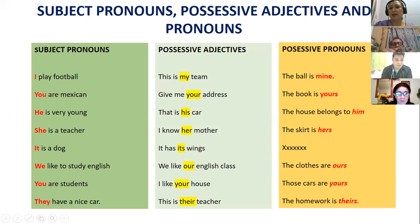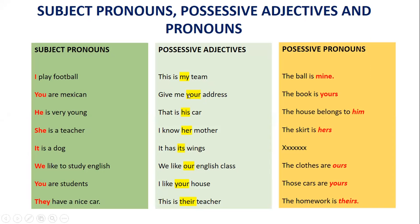You already have seen this material. We have the subject pronouns, the possessive adjectives, and the possessive pronouns. The subject pronouns are I, you, he, she, it, we, you, and they. And the possessive adjectives — when you're going to talk about something that belongs to you, you say 'my': this is my team. For 'you' singular: give me your address. For 'he', we use 'his': that is his car — su carro de él. For 'she': I know her mother — conozco a su mamá de ella.